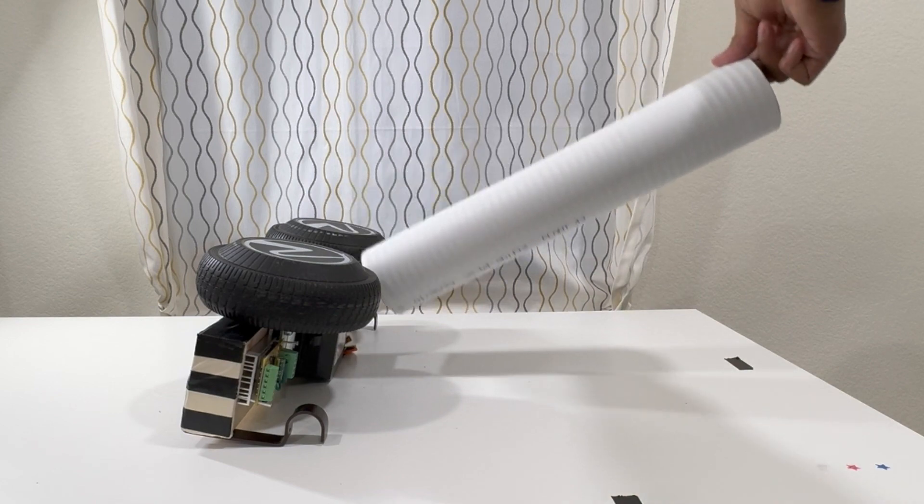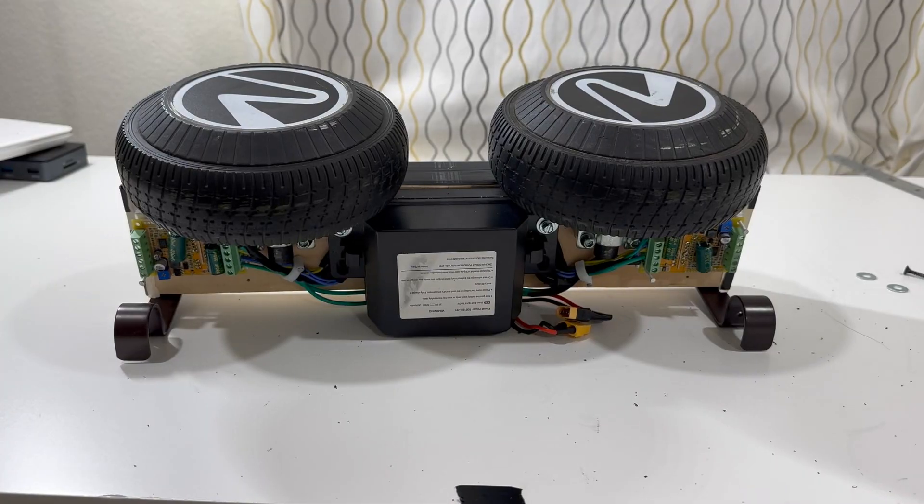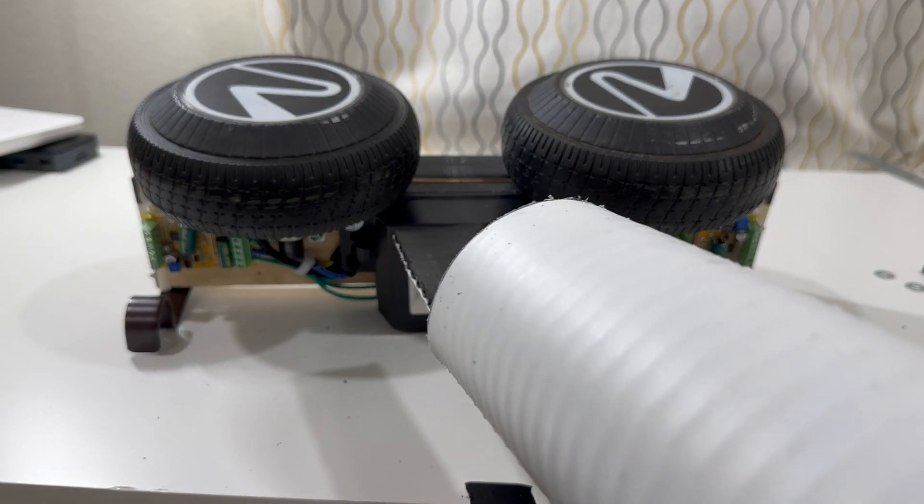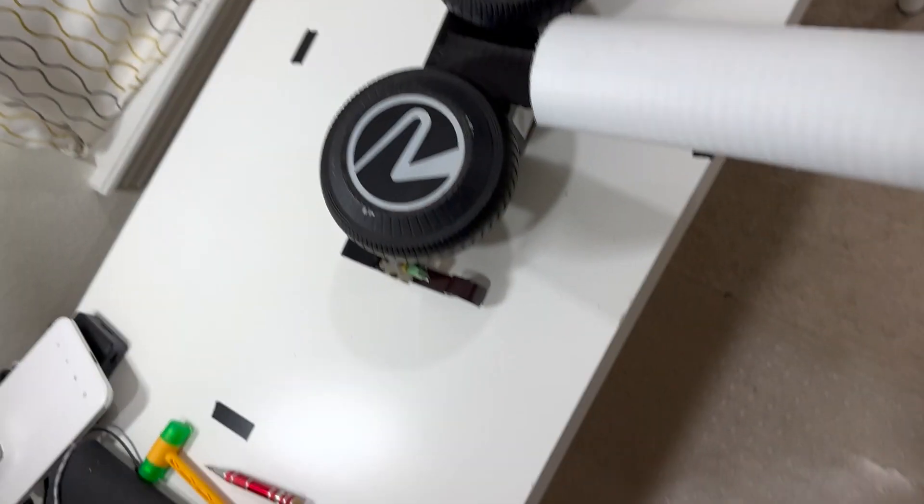The PVC tube should be roughly about 12 to 18 inches long with a diameter slightly bigger than the type of cricket ball that we are using. This PVC tube will then be mounted in the center of those two bowling wheels.